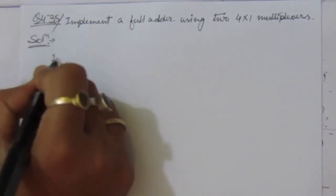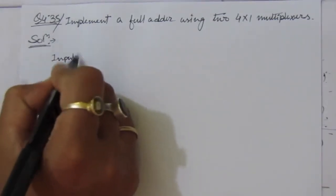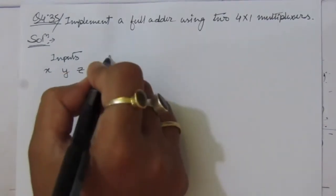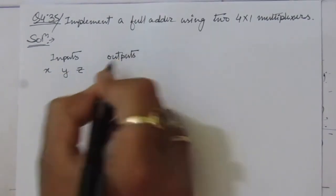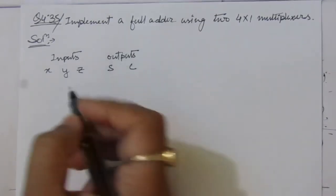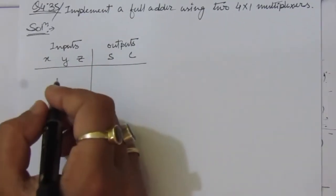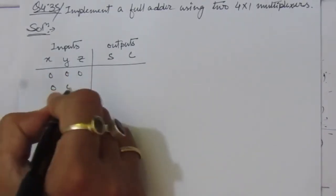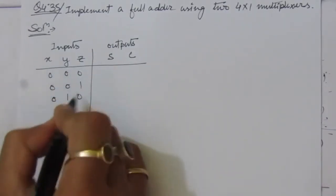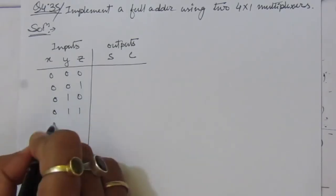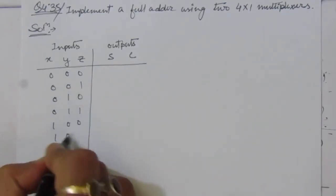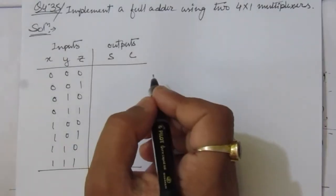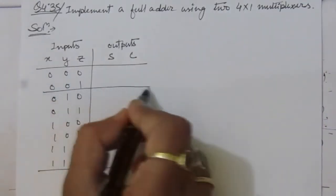First of all we have the inputs. Inputs are x, y, and z, and the outputs are sum and carry. We have three input variables, so we will have eight combinations. The combinations are: 0 0 0, 0 0 1, 0 1 0, 0 1 1, 1 0 0, 1 0 1, 1 1 0, and 1 1 1. We will take two rows as a pair.